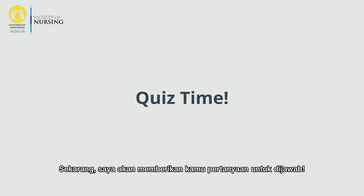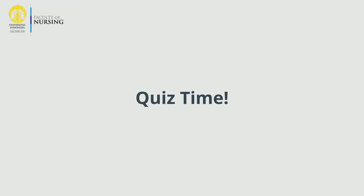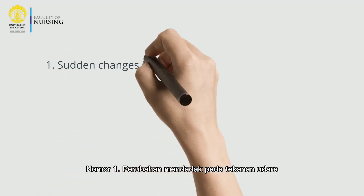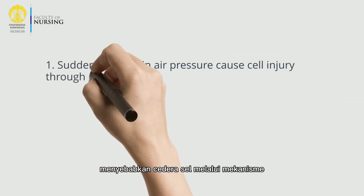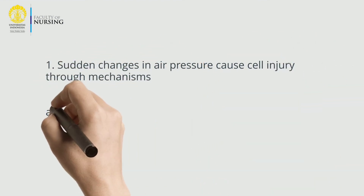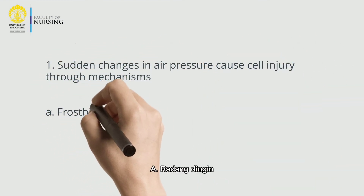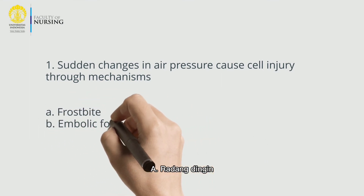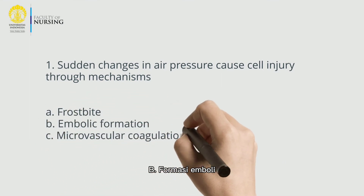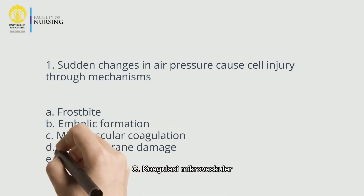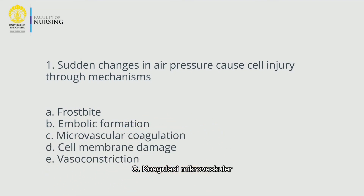Now let me give you a few questions to answer. Question 1: Sudden changes in air pressure cause cell injury through which mechanism? A. Frostbite, B. Embolic formation, C. Microvascular coagulation, D. Cell membrane damage, E. Vasoconstriction.